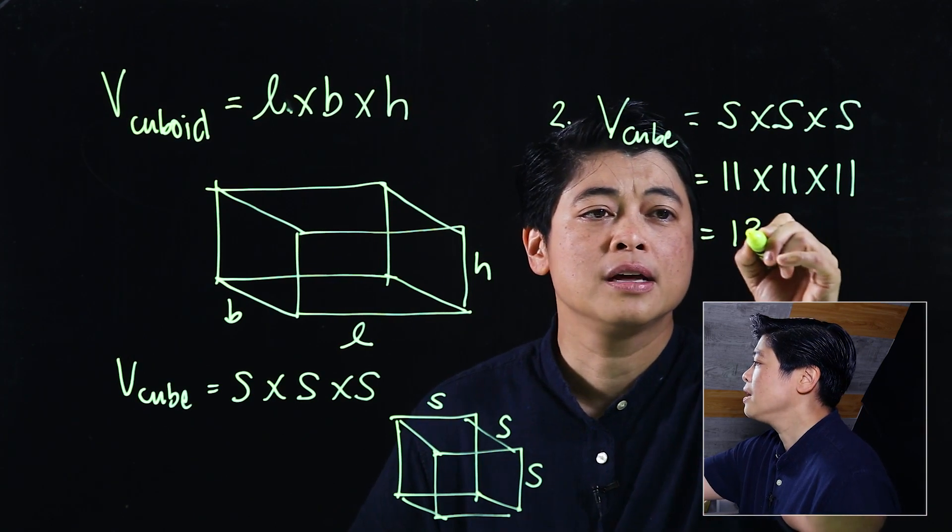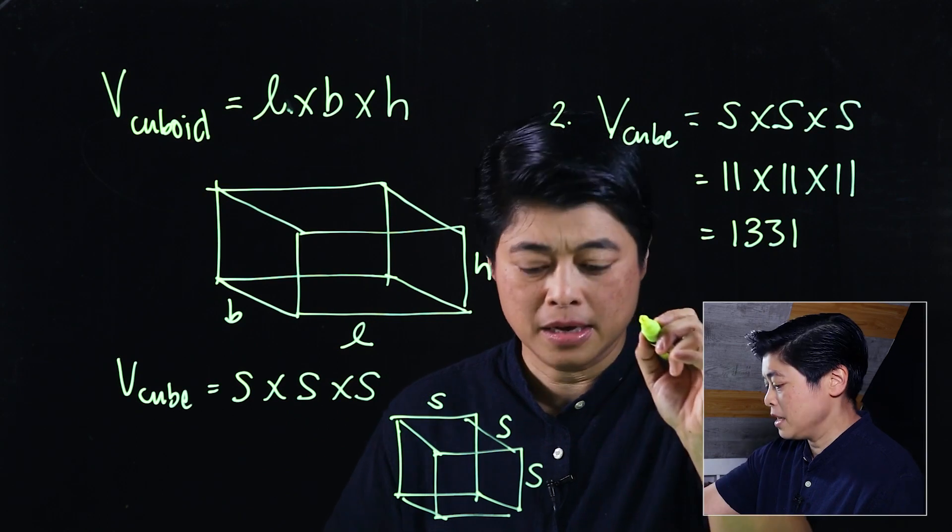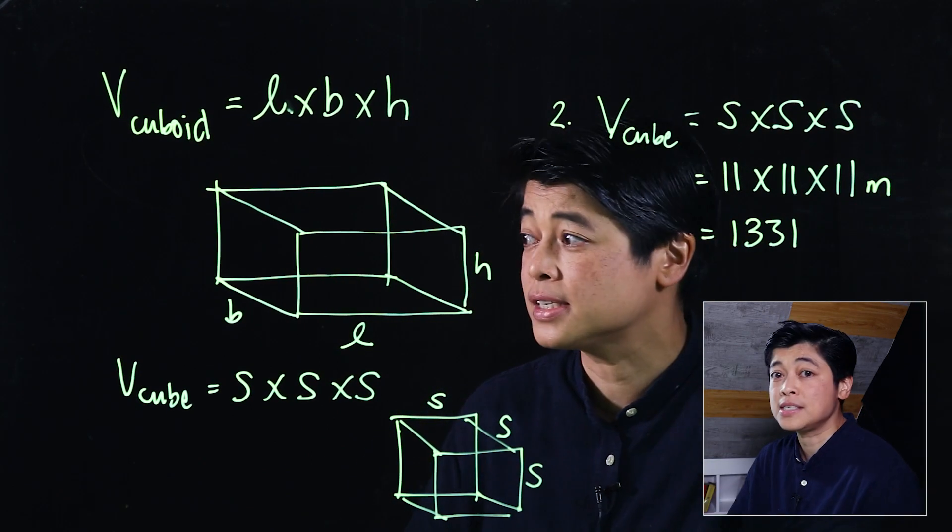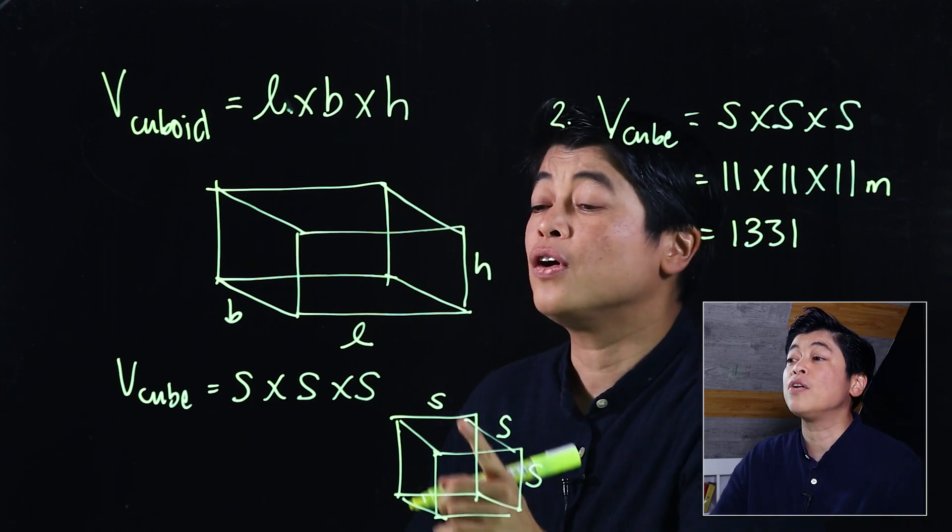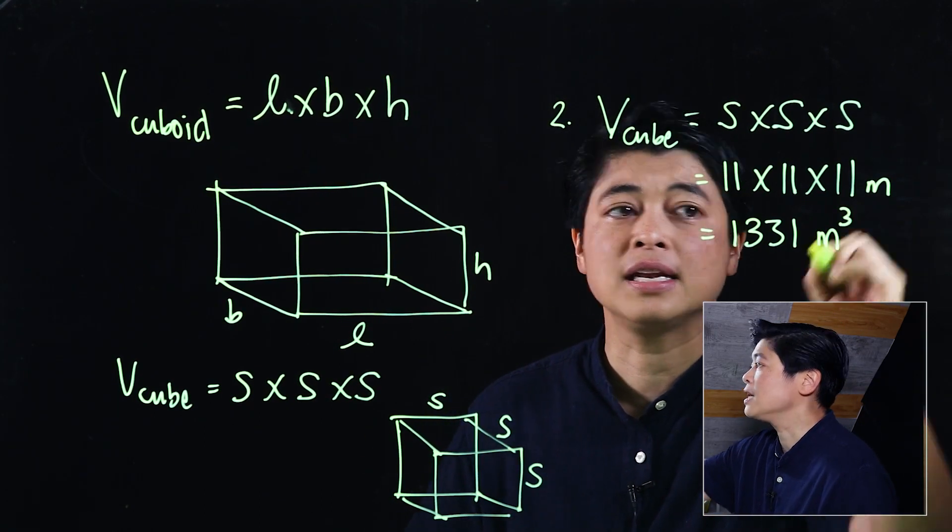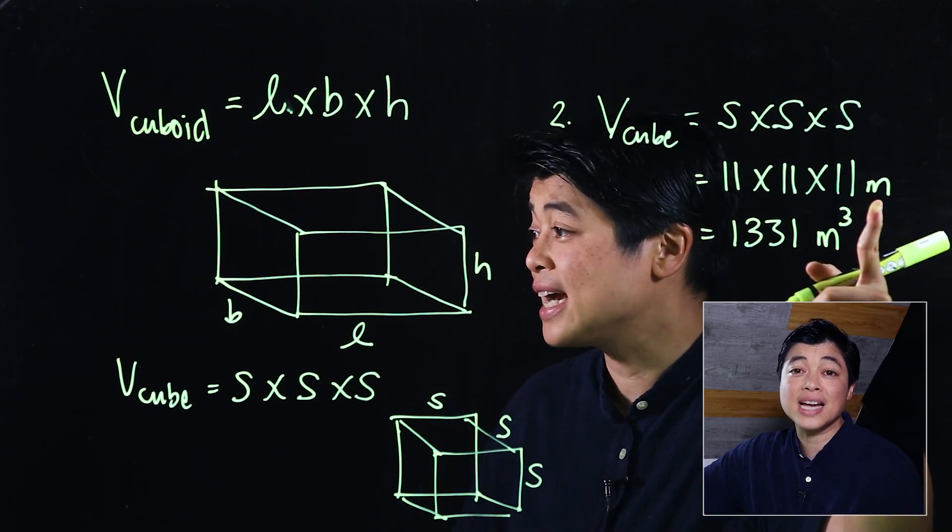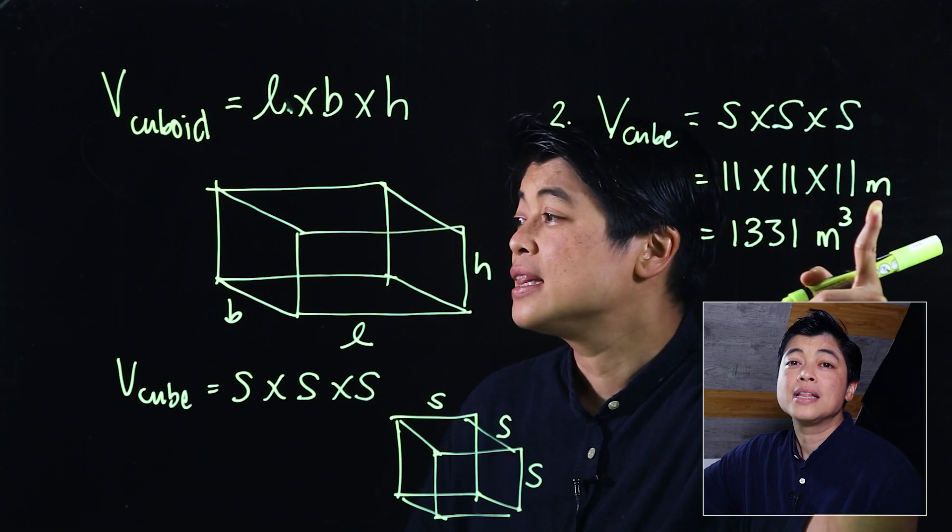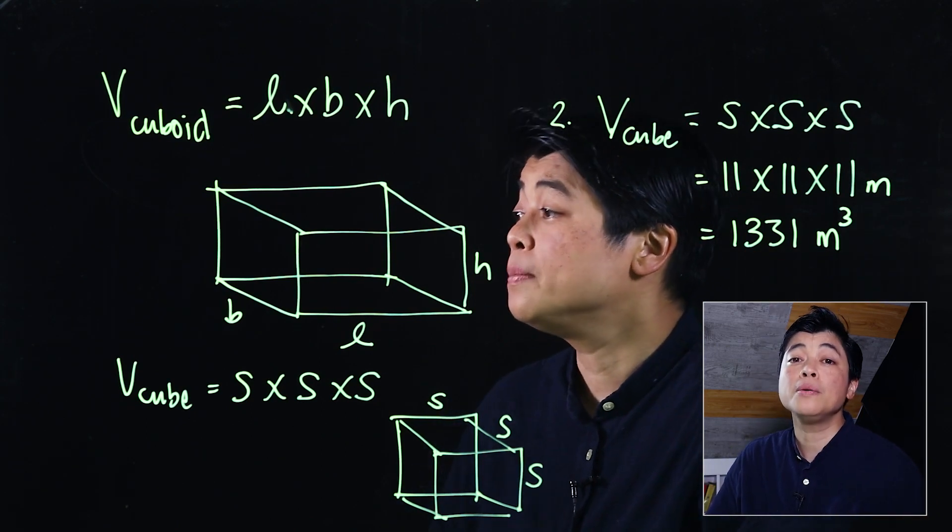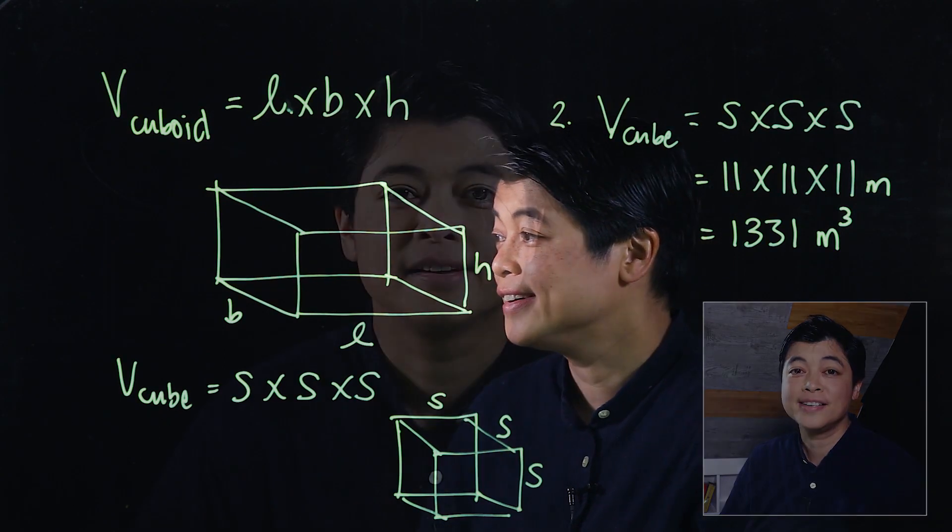Since the unit of measurement of the side is in meters, the unit of volume will be cubic meter. So it's written like that: cubic meter. If the unit of measurement of the side is in centimeters, then the unit of volume becomes cubic centimeters or centimeters cube.